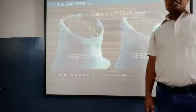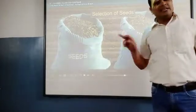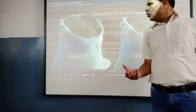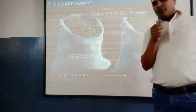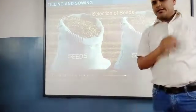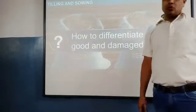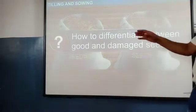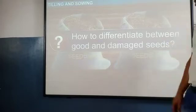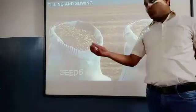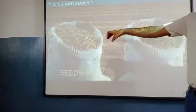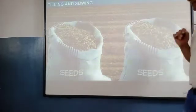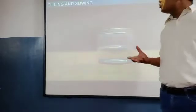The second step is selection of seed. We have to select good seeds so that our crop yield will be very good. If you do not select the proper seed, you can lose your harvest. How do we differentiate between a good and a damaged seed? Take some amount of seed and put it in water.